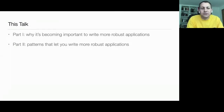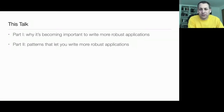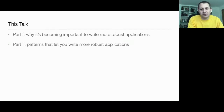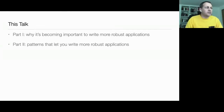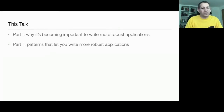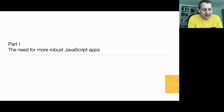Mark Miller, for context, is also a member of ECMA TC39, did a lot of work on ECMAScript 5th edition, used to work at Google on a secure subset of JavaScript called Caja, and is now chief scientist at Agoric, a blockchain startup. My talk will be in two roughly equal parts: the first part is about why it's becoming more important to write robust apps in JavaScript, and the second part covers design patterns that help you write more robust JavaScript apps.